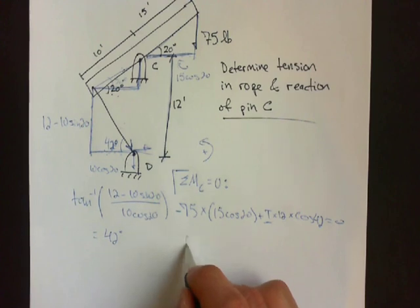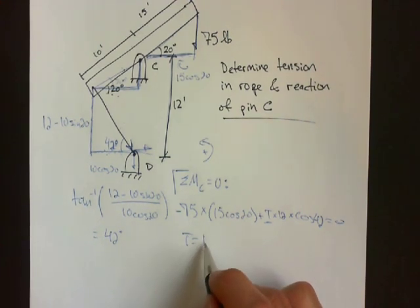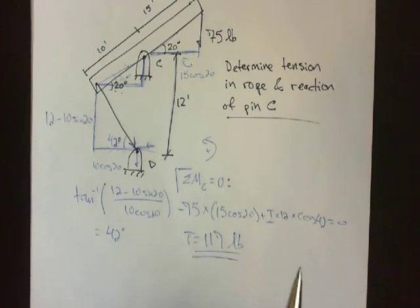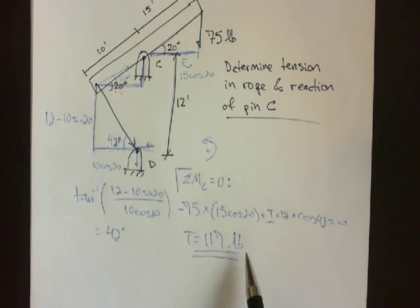So you solve for T, and T equals 117 pounds. So this is your tension in this rope.